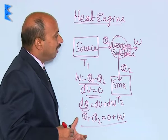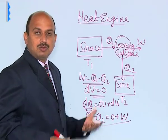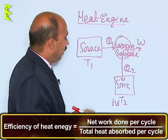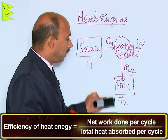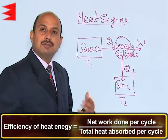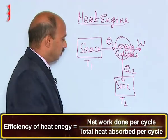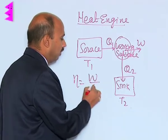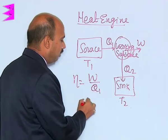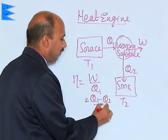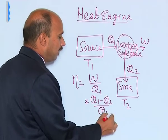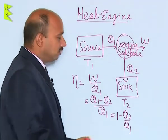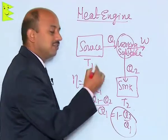Now we can define the efficiency of the heat engine. Efficiency is the net work done per cycle divided by the total heat absorbed per cycle. So efficiency eta equals W divided by Q1, which can be written as (Q1 minus Q2) divided by Q1. This simplifies to eta = 1 minus Q2 upon Q1. This is the formula for the efficiency of the heat engine.